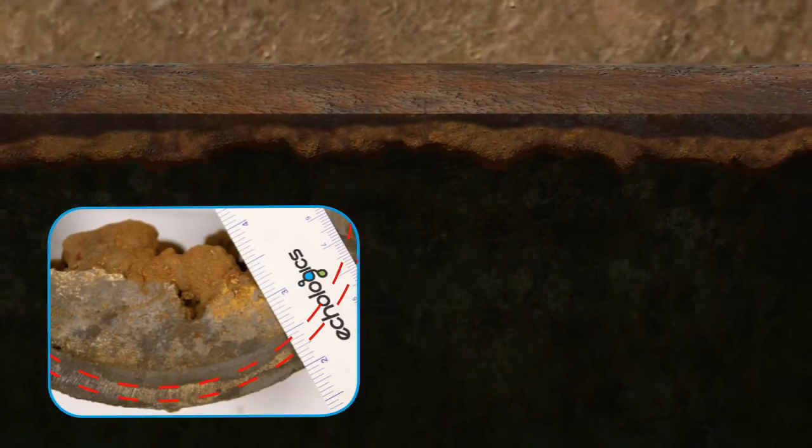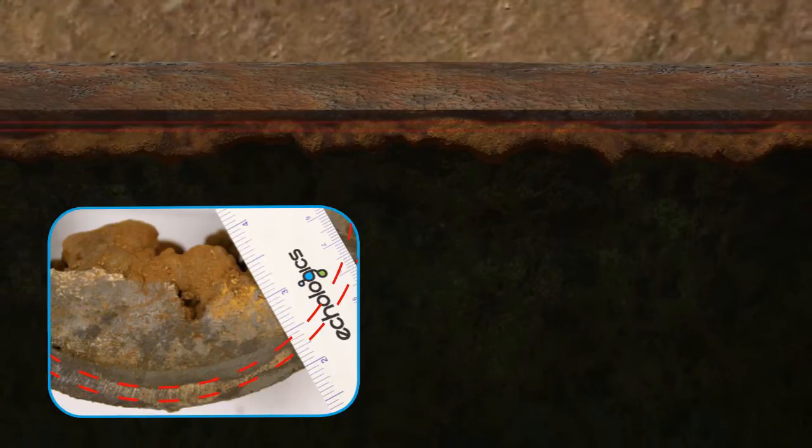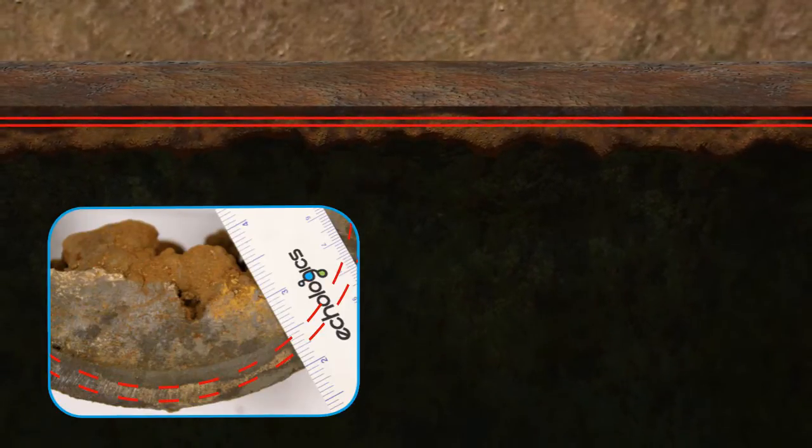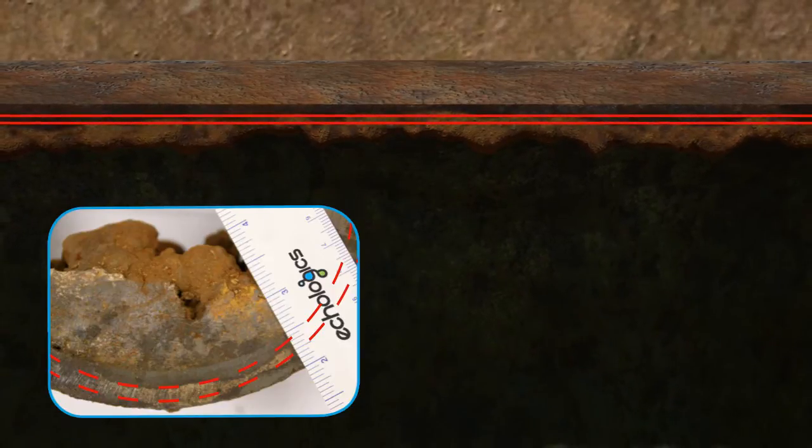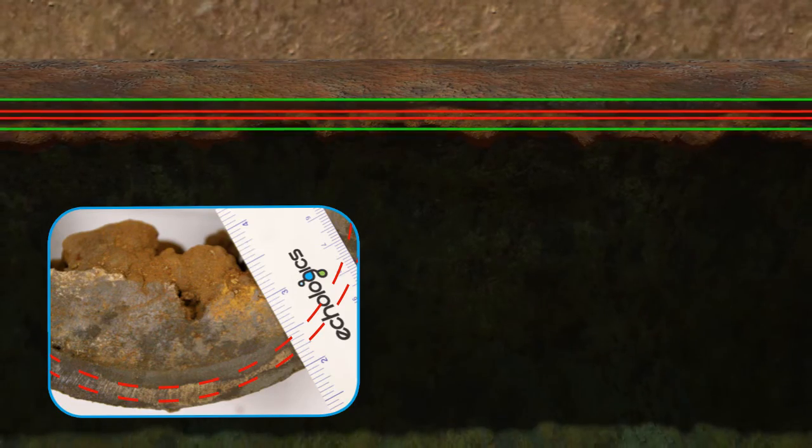Ecologic's field engineers use advanced algorithms to convert the data into a measure of the average minimum wall thickness of the inspected pipe segment. The calculated wall thickness measurement is compared to the original thickness of the pipe to determine the average percentage of wall loss.